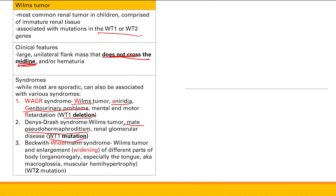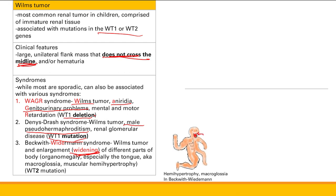Finally, Beckwith-Wiedemann syndrome: Wilms tumor plus enlargement of various body parts — 'Wiedemann widening.' You get large organs, especially the tongue (macroglossia), and muscular hemihypertrophy, where one half of the body is larger than the other. To remember: Beckwith-Wiedemann means widening — large organs, large tongue, one half bigger. Denys-Drash requires memorization: male pseudohermaphroditism and renal glomerular disease.